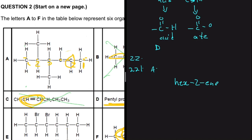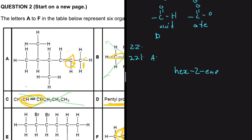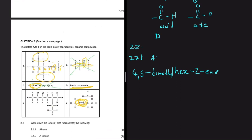Starting from the other side places the functional group on carbon 4, so we prioritize the side that gives the lower number: 'hex-2-ene'. Now naming the carbons: carbon 1 through 6. On carbon 4 we have one branch (one carbon), and on carbon 5 we also have a branch. Since there are two methyl groups, we say 'dimethyl', giving us '4,5-dimethylhex-2-ene'. No dash is needed between identical substituent numbers.